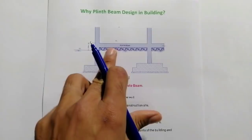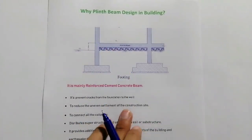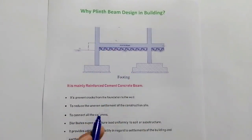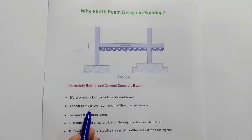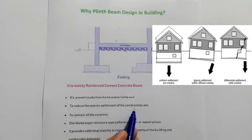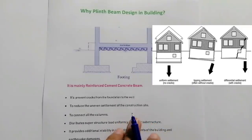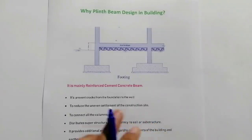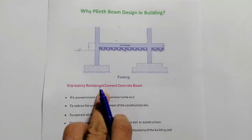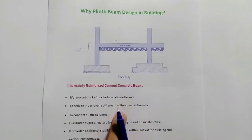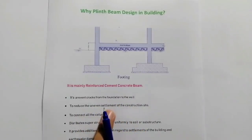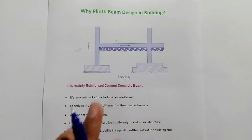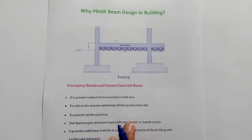The second purpose of plinth beam is to reduce the uneven settlement of the construction site. We have different types of settlement in soil and foundation, so plinth beam reduces uneven settlement. Therefore we design plinth beam in building constructions.